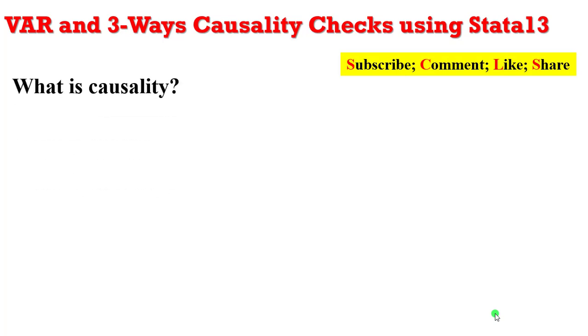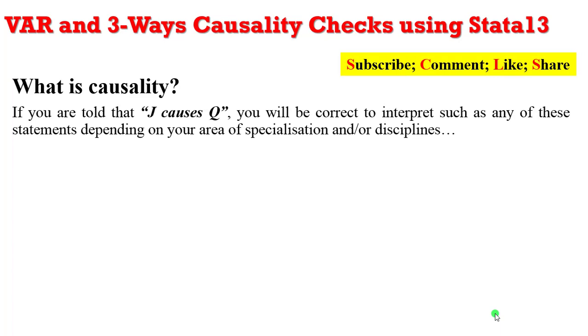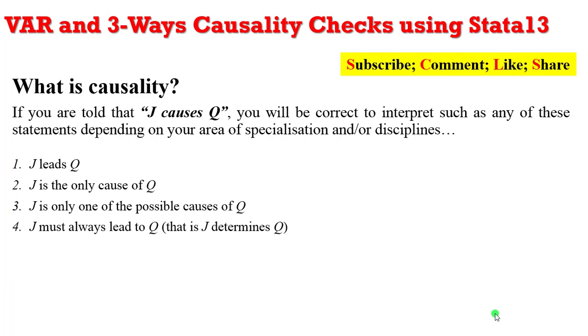So what exactly is causality? If you are told that J causes Q, you will be correct to interpret such as any of these statements depending on your area of specialization or disciplines. You could say that J leads Q, or that J is the only cause of Q, or J is only one of the possible causes of Q. J must always lead to Q, that is, J determines Q.